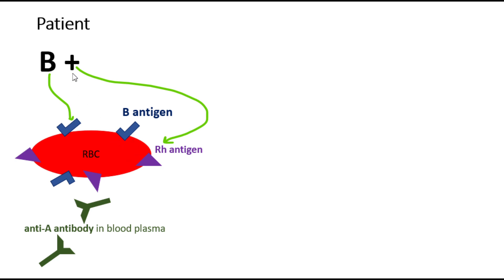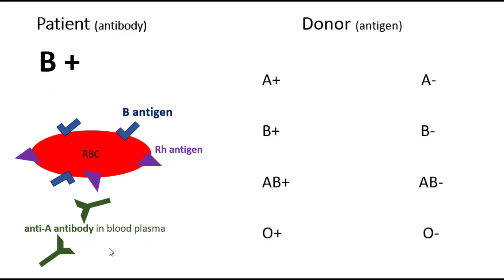We know that the immune system builds antibodies against the antigens that we do not have. Since a B positive blood type does not have A antigen, the immune system builds antibodies against A and releases them into the blood plasma. So this patient is not okay with receiving A antigen. When I look at my donors, the ones who have A antigen should be eliminated from the list, because the patient's anti-A antibodies can attack those red blood cells.